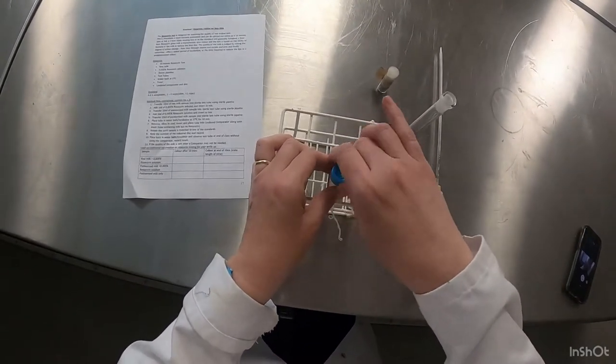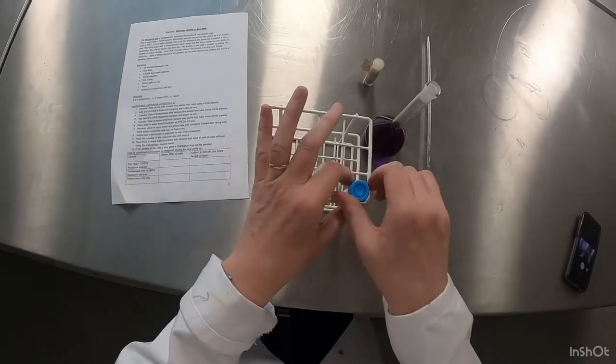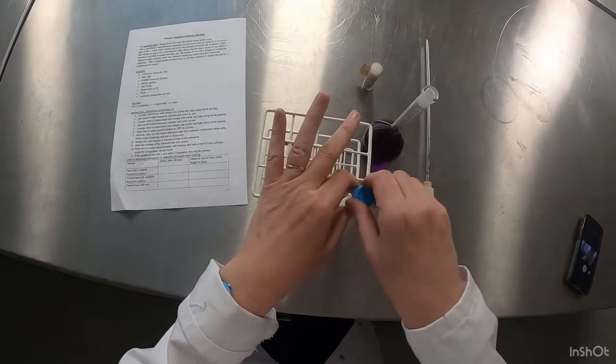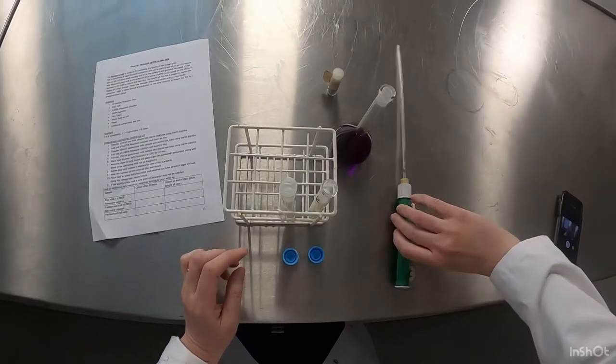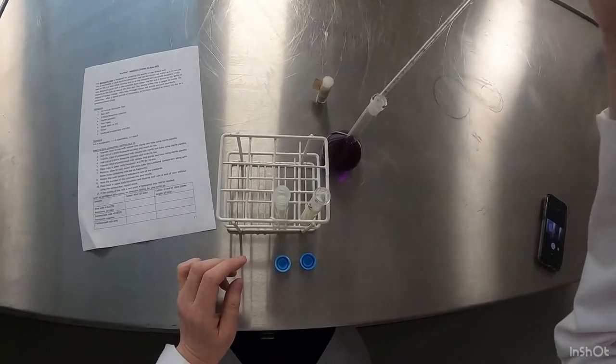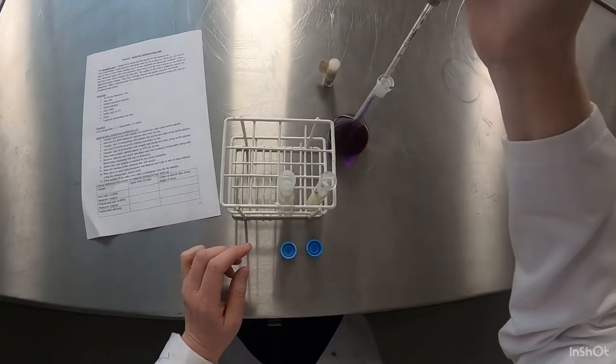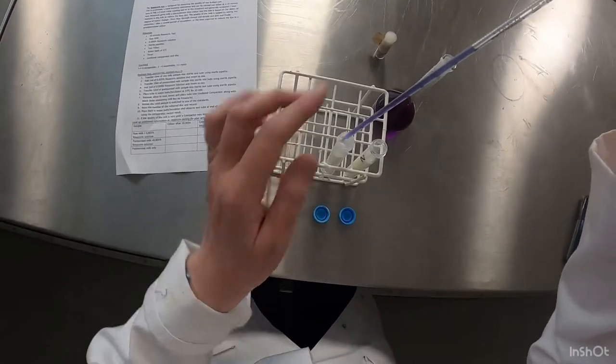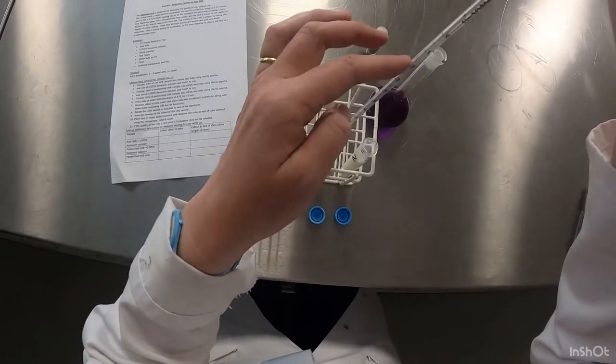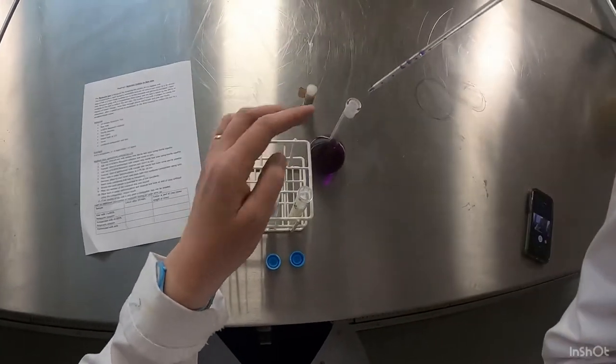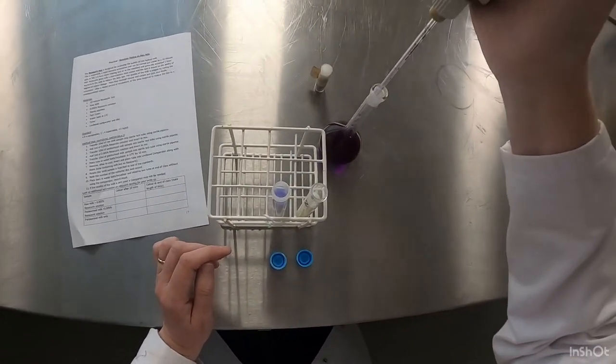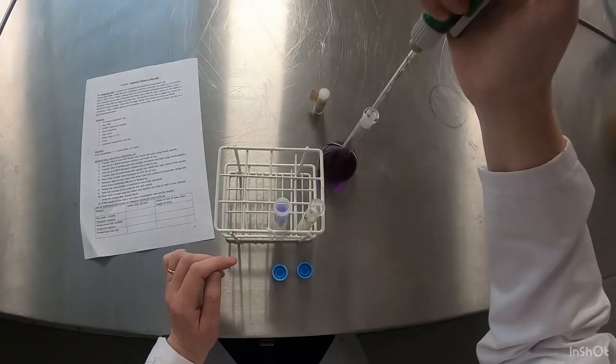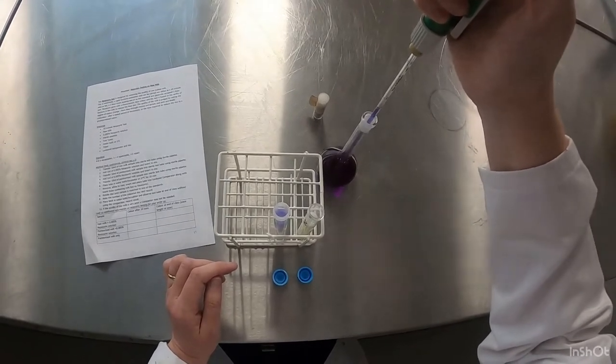I'm going to take the lid off both samples and add 1ml of the Resazurin into each of the samples. One of the samples is raw milk and one of the samples is pasteurized milk. So one is control and the other is the test sample.